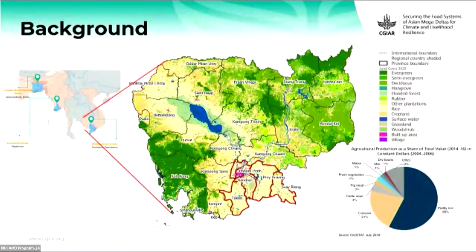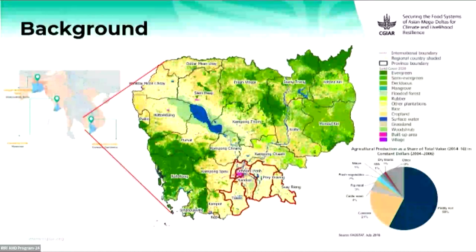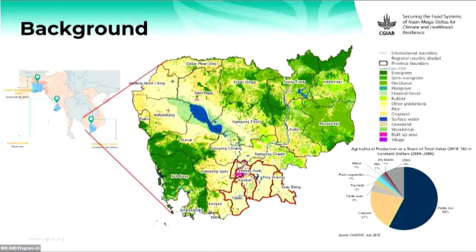I'd like to give some background on the study site in Cambodia. It includes four provinces in the southern part: Takeo, Kandal, Prey Veng, and Svay Rieng. It's part of the Mekong Delta, one of the three major deltas in Asia. The main food production in these four provinces is rice, along with cash crops like cassava, maize, vegetables, and some small aquaculture.